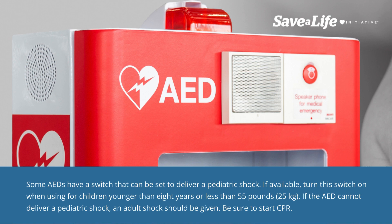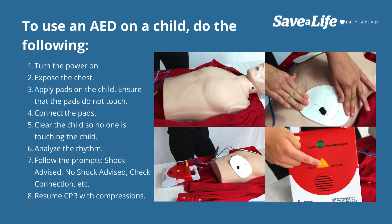Be sure to start CPR. To use an AED on a child, do the following: Turn the power on. Expose the chest. Apply pads on the child. Ensure that the pads do not touch. Connect the pads. Clear the child so no one is touching the child. Analyze the rhythm. Follow the prompts — shock advised, no shock advised, check connection, etc. Resume CPR with compressions.